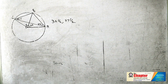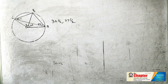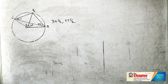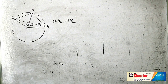Draw a circle of radius 4.5 cm. Draw a triangle of angles 30 degrees, 70 degrees, and 80 degrees with its vertices on the circle.